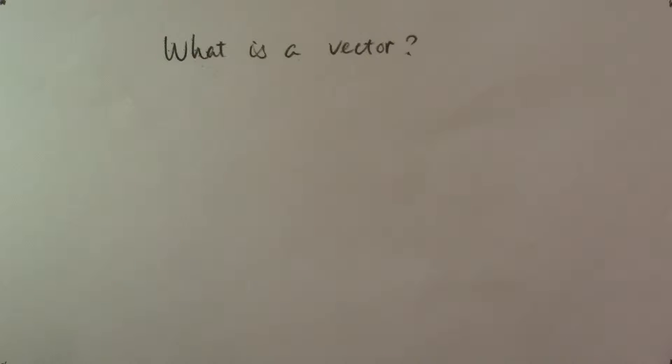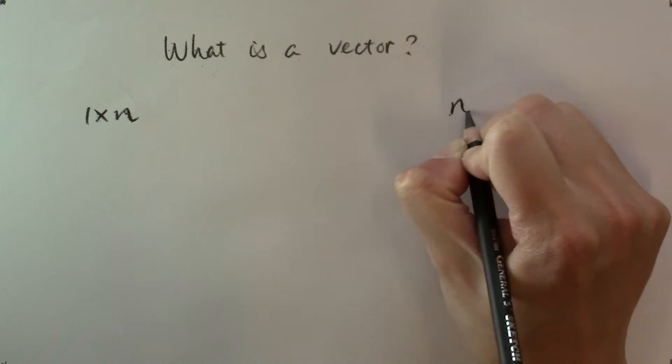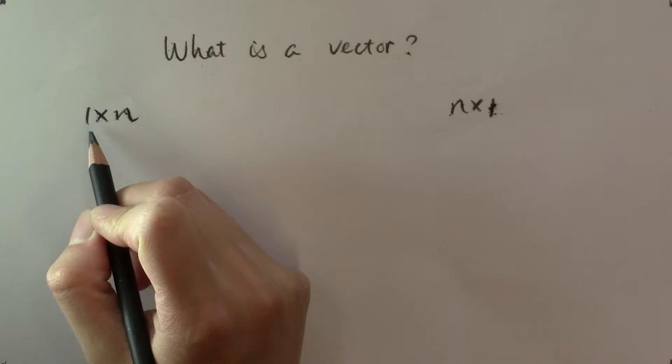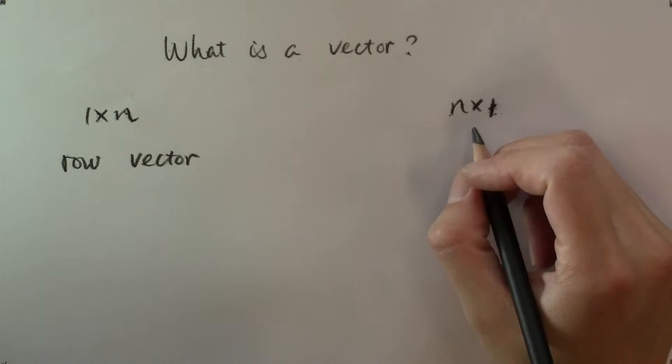Algebraically, a vector can be thought of as a special case of a matrix when its dimensions is either 1 by n or n by 1. If the number of rows is equal to 1, then the matrix becomes a row vector. When the number of columns is equal to 1, then the matrix becomes a column vector.